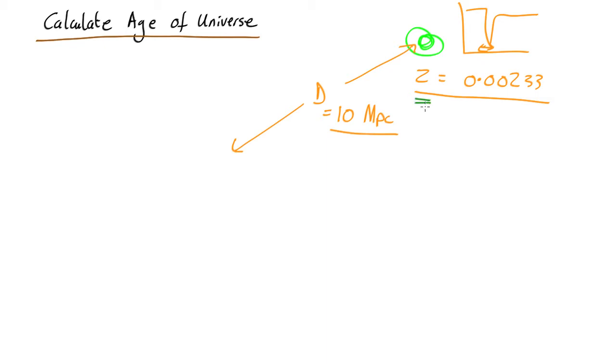Well, we can convert this into a velocity. If you remember, redshift is equal to the velocity divided by the speed of light, so velocity is just equal to c times the redshift.